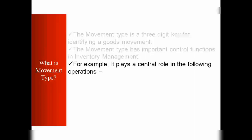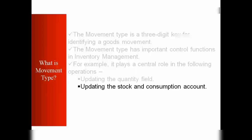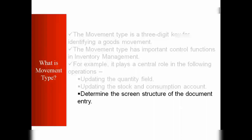The movement type has important control functions in inventory management. For example, it plays a central role in updating the quantity field — some movement types update the quantity and some do not — updating the stock and consumption account, and determining the screen structure of the document entry.